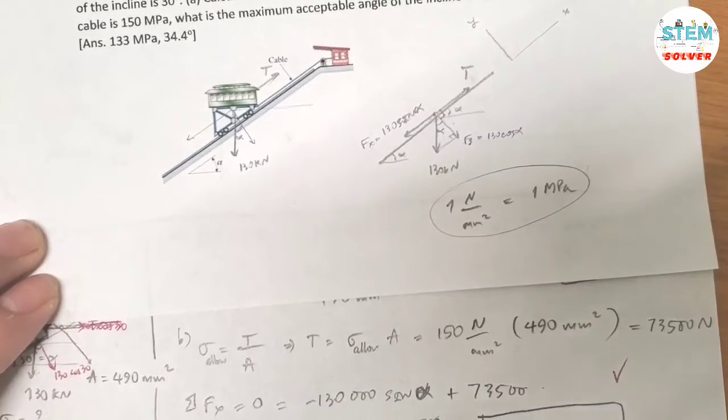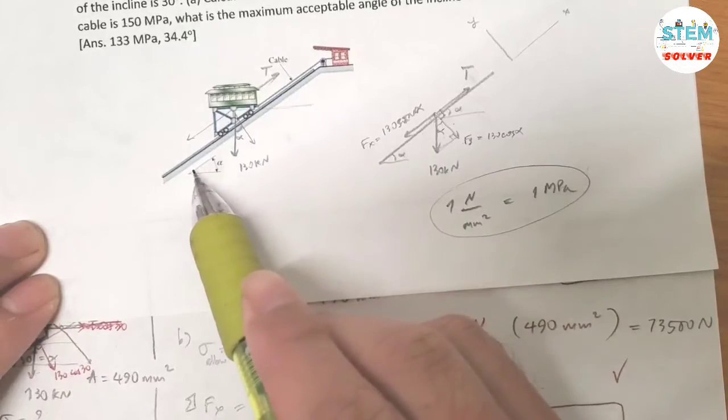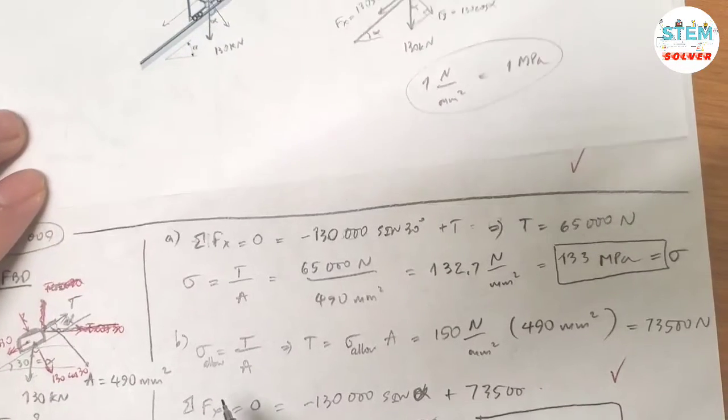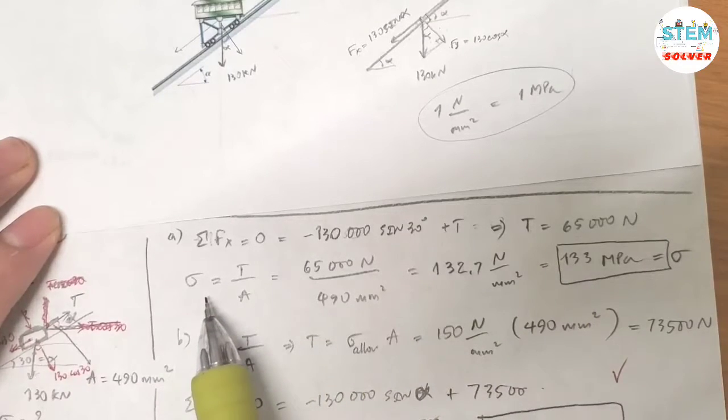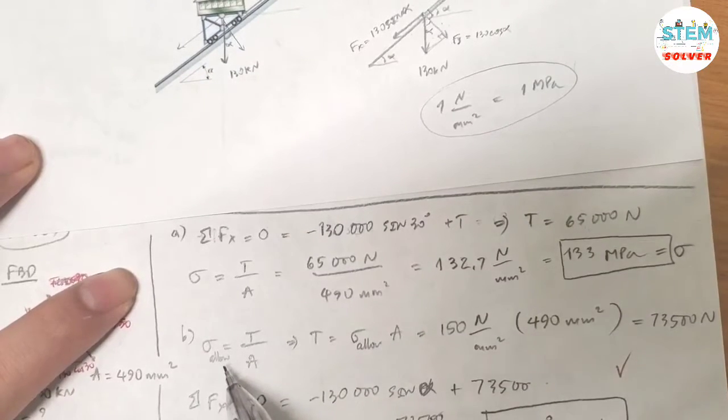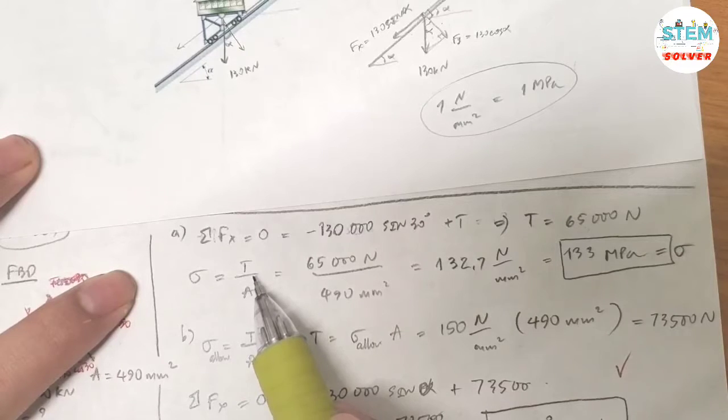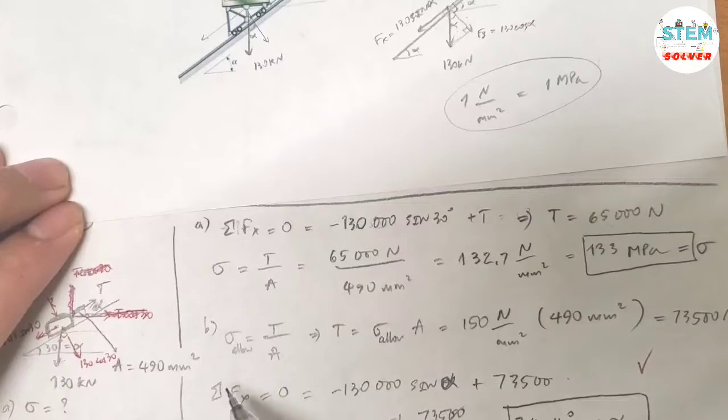Now let's move on to part B. Part B is asking us to find the maximum angle, which is this angle, the inclined angle. So we just do the opposite of what we just did for part A. So in part A, we went from finding the tension force and then the compressive stress. Now we just go the opposite way: finding the tension force in the cable and then find the angle. So that's the strategy.